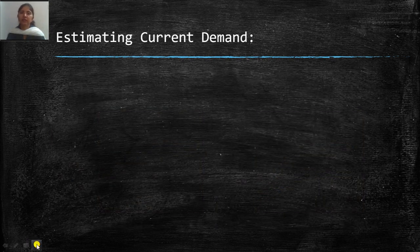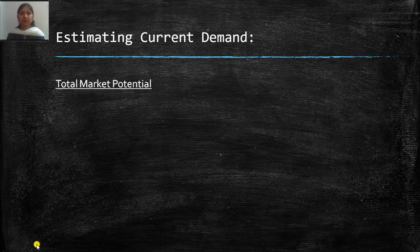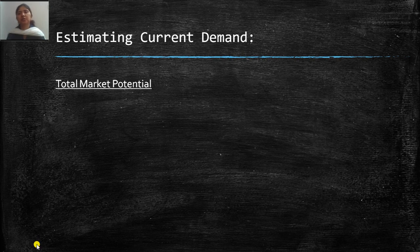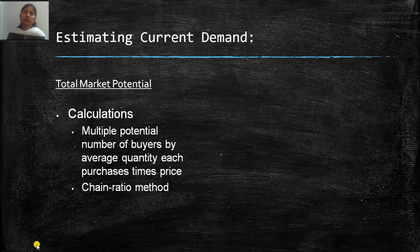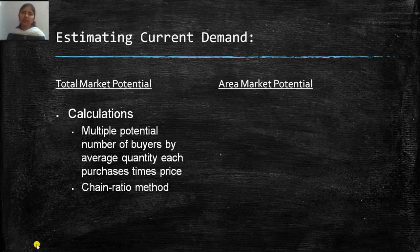Now we'll see estimating current demand. Total market potential is the total number of buyers and the volume they buy. You can figure it out using this formula: potential buyers multiply by average quantity purchased multiply by the price of the product.